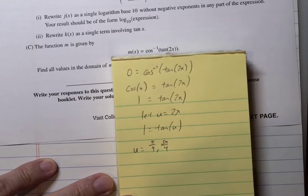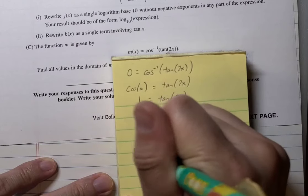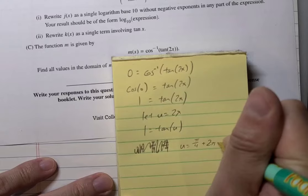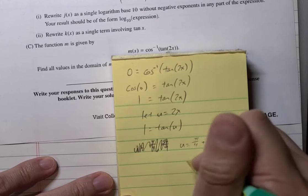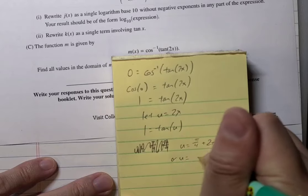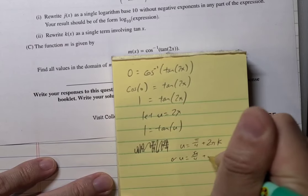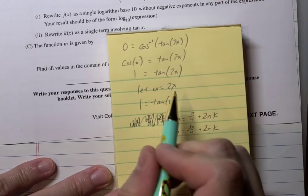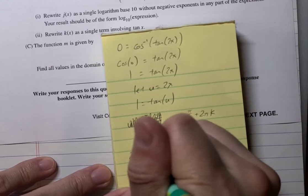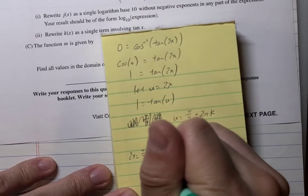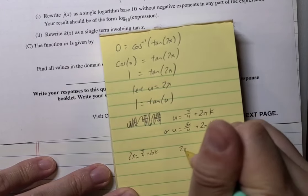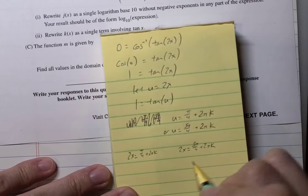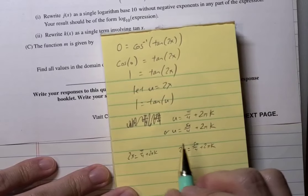And then, let me write it like this. u equals pi over 4 plus 2 pi k, where k is an integer. And u equals 5 pi over 4 plus 2 pi k. So, remember, u is 2x. So, it'll be 2x, I'm going to rewrite it, is pi over 4 plus 2 pi k. And 2x is 5 pi over 4 plus 2 pi k.